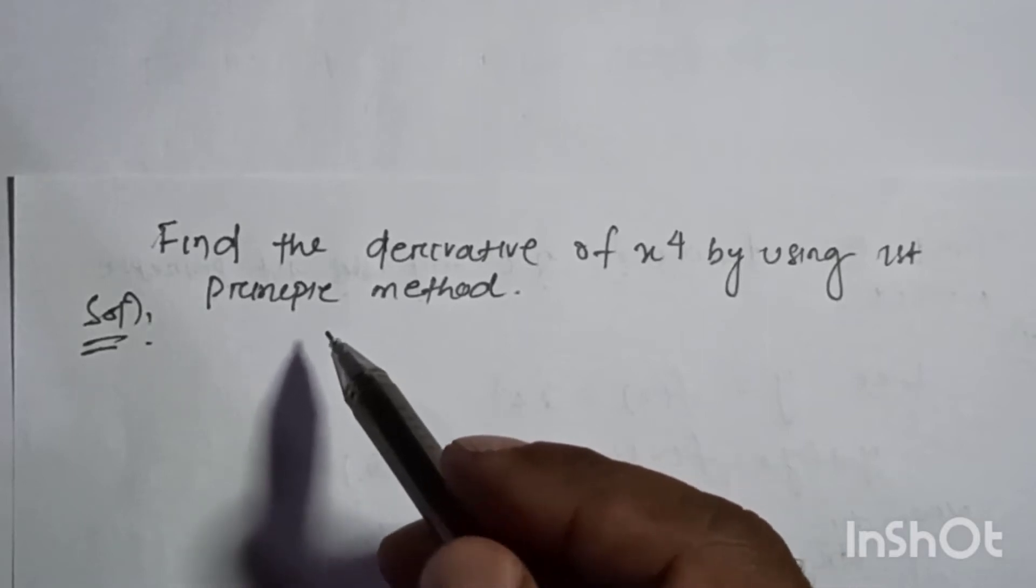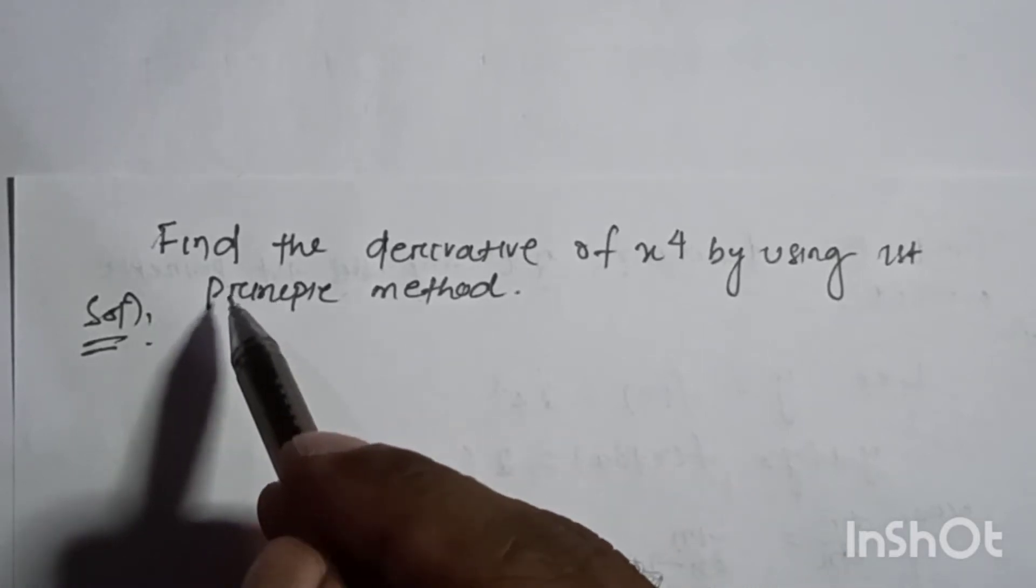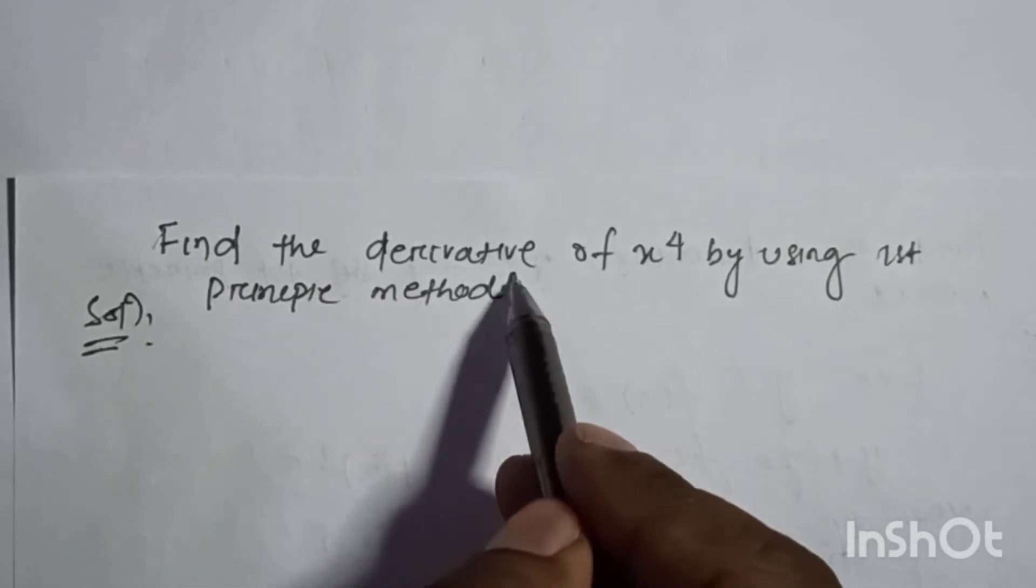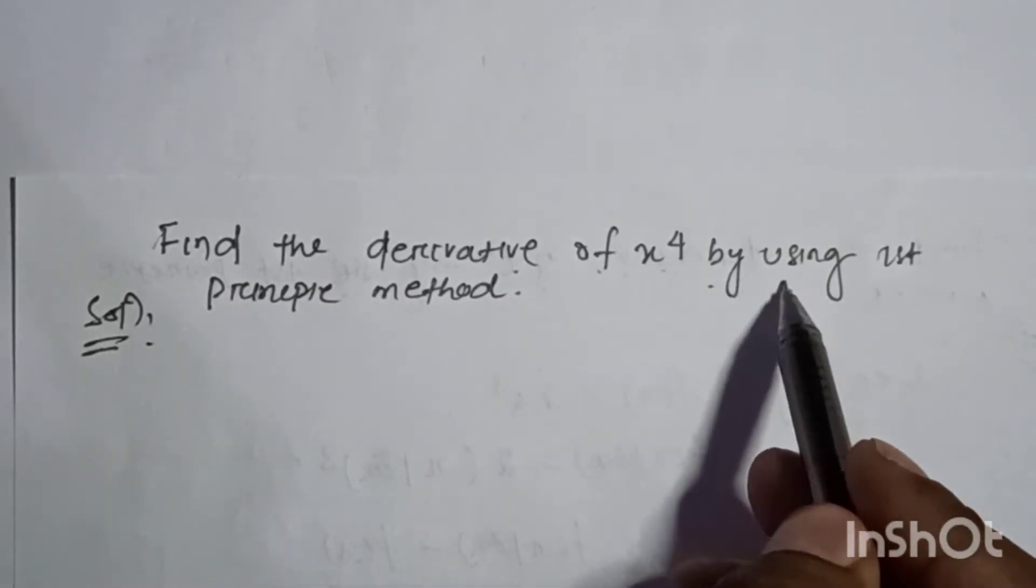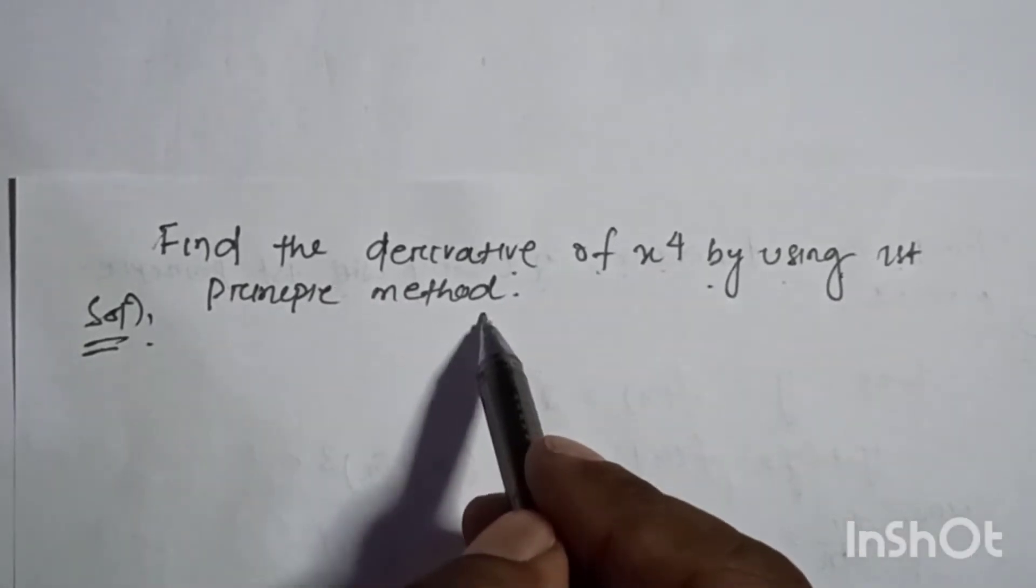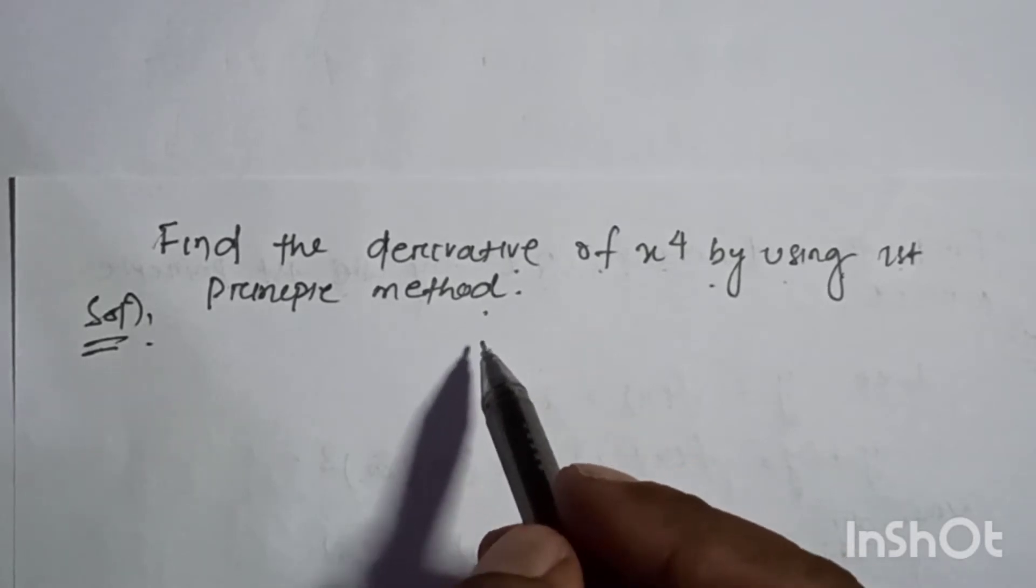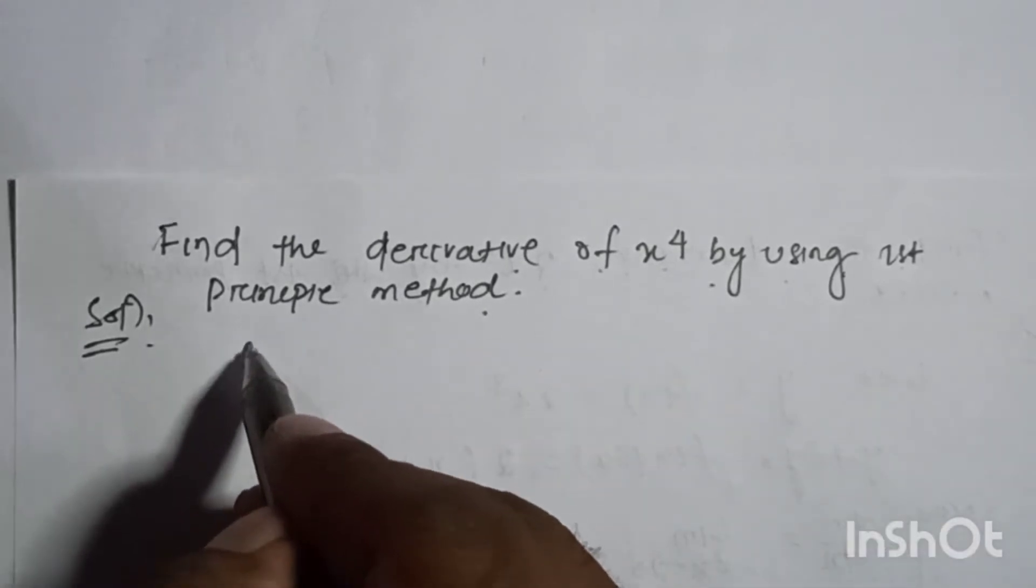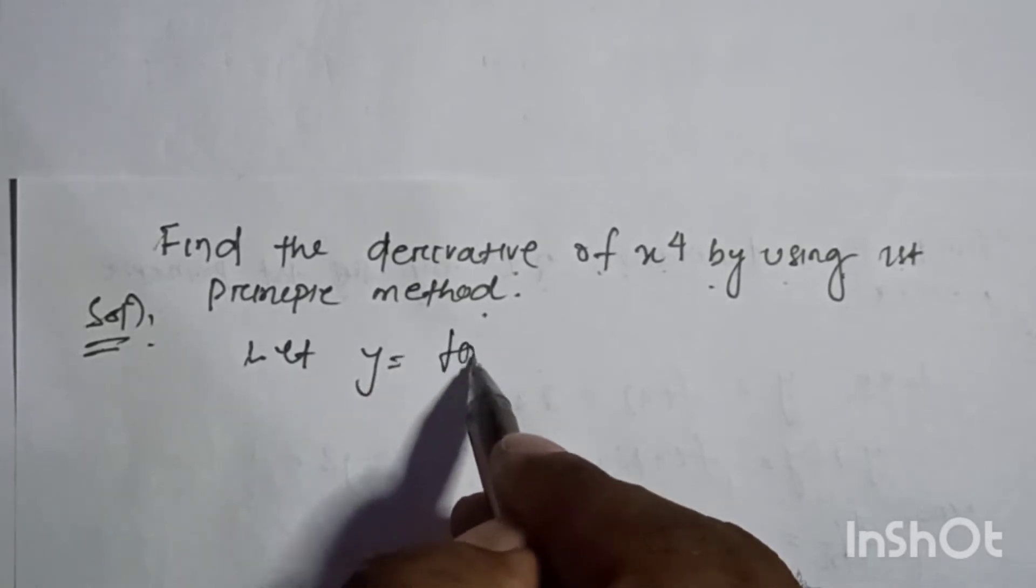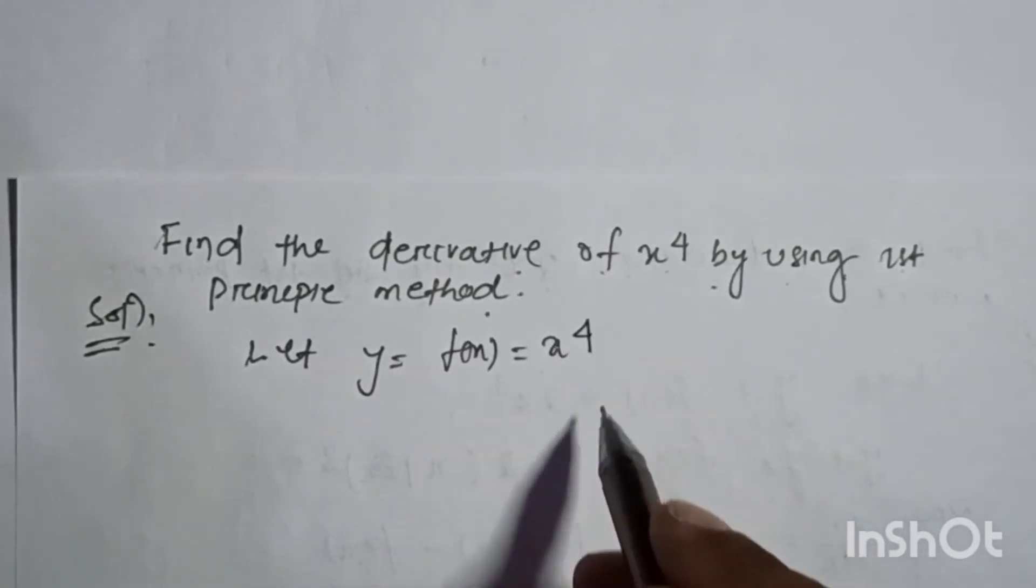Hello students, the question given is: Find the derivative of x to the power 4 by using first principle method or definition method. Let y is equal to f of x is equal to x to the power 4.